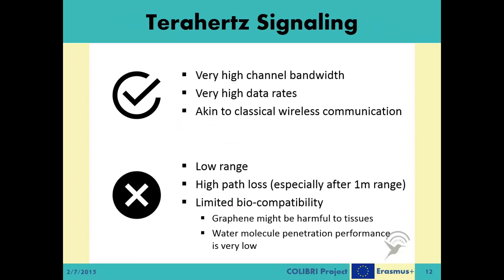To summarize, the features of the terahertz signaling system can be itemized as follows. On the positive side, due to the inherent potential of the terahertz band, terahertz signaling offers very high channel bandwidth and consequently very high data rates. It is also similar to classical electromagnetic wave-based wireless communication, meaning it is much easier to leverage the 20-plus years of experience from wireless communication research. On the downside, terahertz waves have very limited ranges — current research shows they cannot be practically used for applications beyond 1 meter. Even at lower ranges, there are very high path loss components that severely reduce communication quality unless special care is taken.